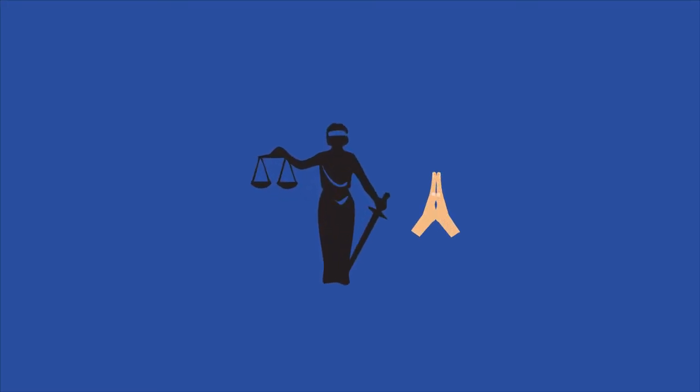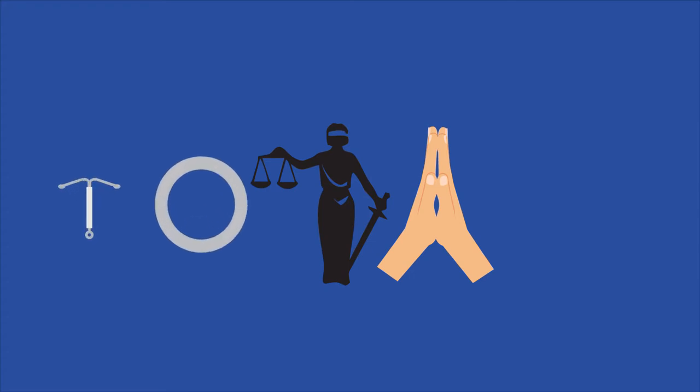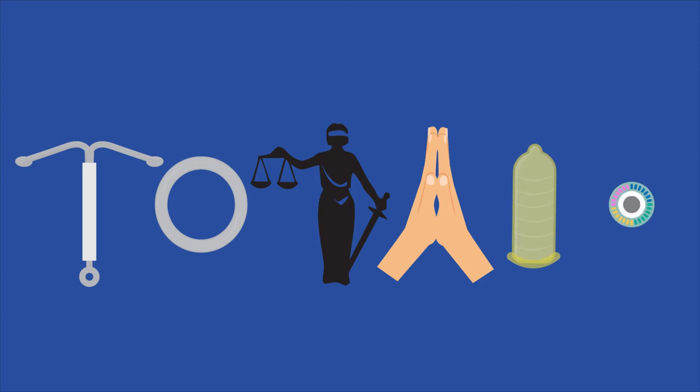In 1879, a Connecticut law banned the use of contraceptives and established punishment for anyone who assisted in providing contraception. The law became more heavily enforced as the government tried to restore Protestant morality. Many religious leaders opposed abortion and birth control.